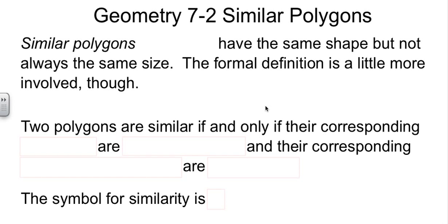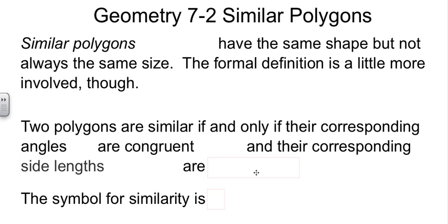Two polygons are similar, this is the formal definition, if and only if their corresponding angles are congruent. That's the part that makes it the same shape as having the angles match up. And their corresponding side lengths are proportional. They're in the same ratio.